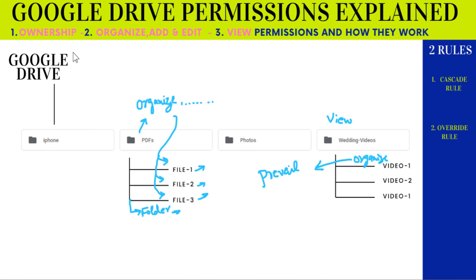Now let's talk about ownership permission. Why would you give someone ownership permission, and why might you seek ownership of certain files and folders? For example, I want to close one of my Gmail accounts but keep my Google Drive folders. What I can do is transfer the ownership of my Google Drive folders from one Gmail account to another. Another case: let's say you gave someone a contract to make your wedding videos, and when he makes the videos, he gives you a link to access them.